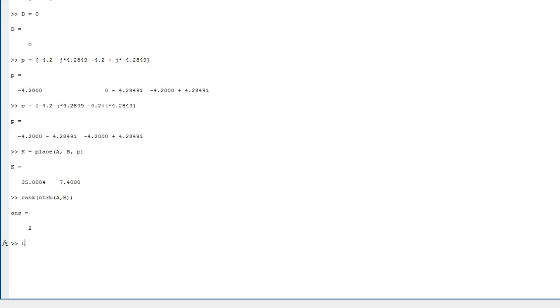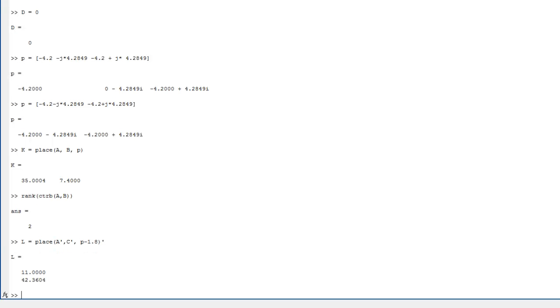Next, we can calculate L. L is equal to place, give it A prime and C prime, and then we give it P, but I'm going to subtract 1.8 from each of the poles, and then take the transpose of that. What I've done here, P minus 1.8, that just subtracts 1.8 from each of the poles. So I get they're a little bit faster now.